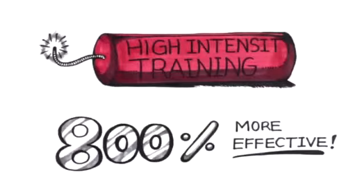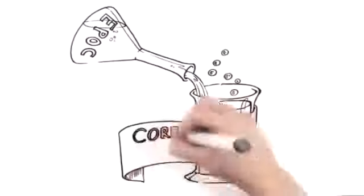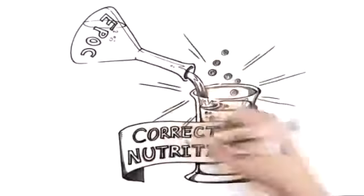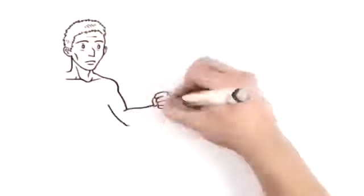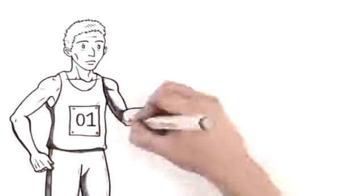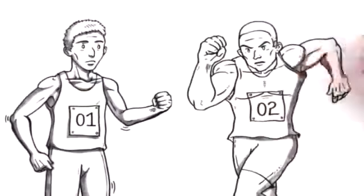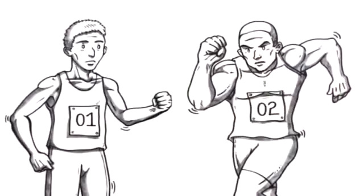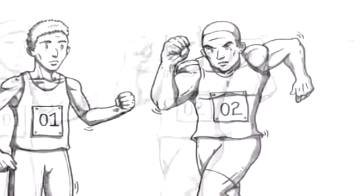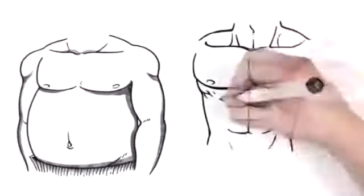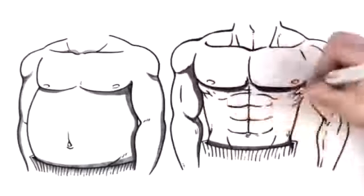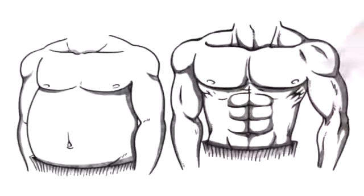The EPOC effect is so powerful that when combined with correct nutrition, it's the only difference between athletes who look like this and athletes who look like this. Ask yourself, which body would you rather have? Put it this way, high-intensity training transformed me from soft to ripped in less than eight short weeks, a far cry from the years I spent doing hours of cardio and endless sit-ups. And if it worked for me, it will work for you too.